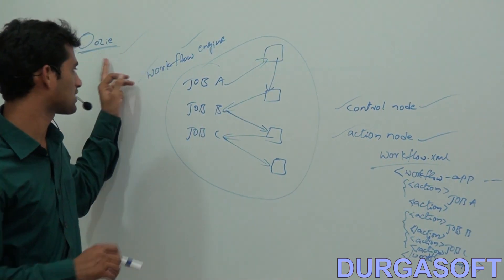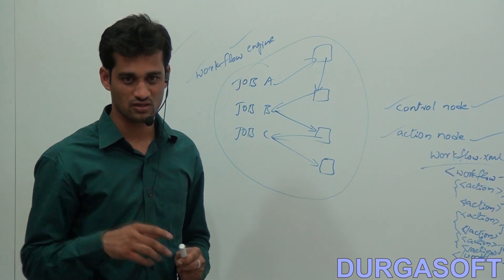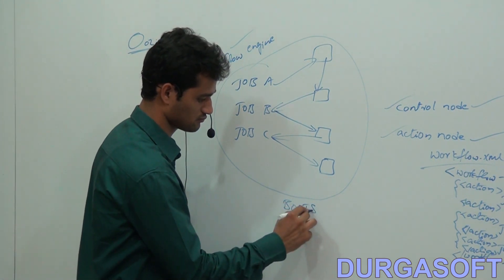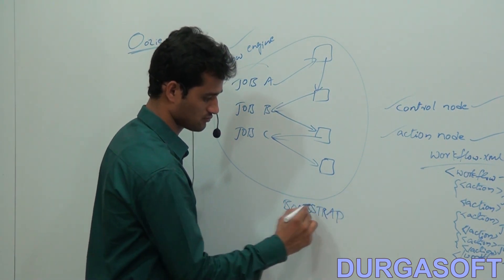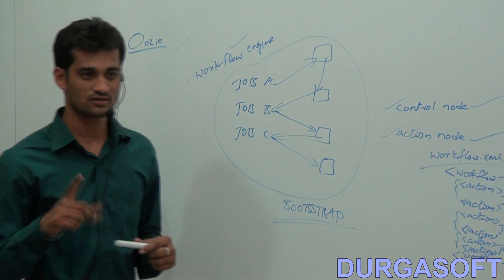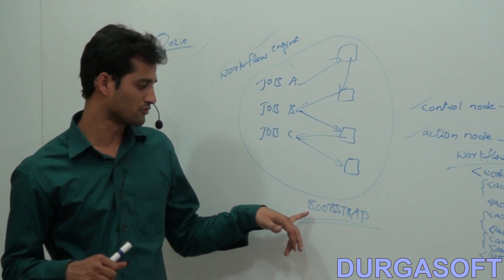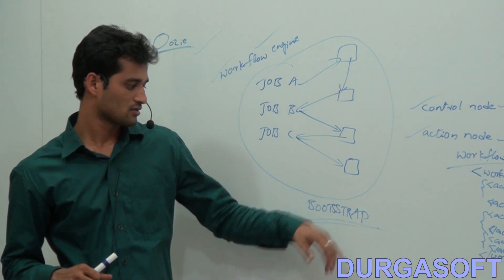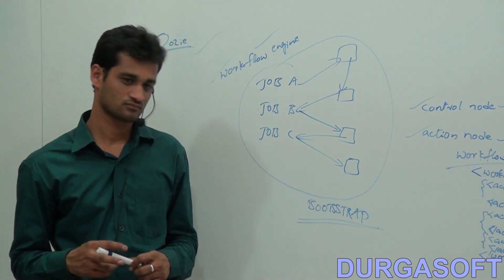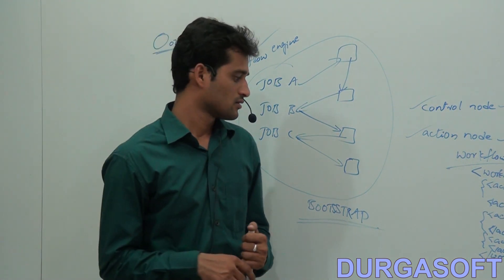So how do we start the Oozie service? Just like your NameNode runs as a service in Hadoop, Oozie also runs with one service — that is the Bootstrap service. Remember that if someone asks you what service is required for running Oozie, the answer is Bootstrap.